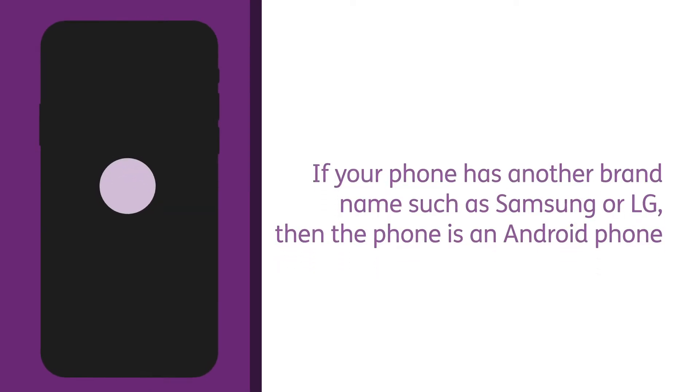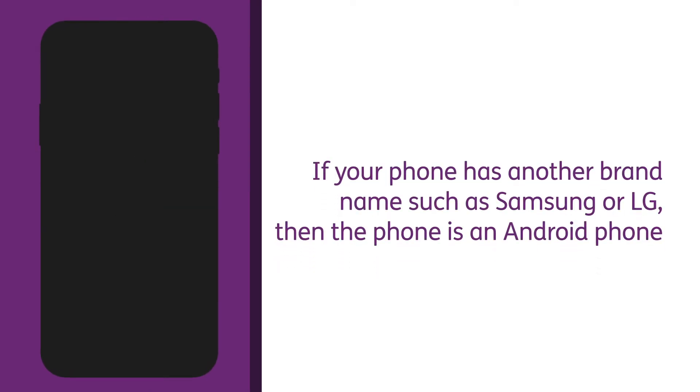To tell if your phone is an iPhone, check the back of the phone for an Apple symbol. If your phone has another brand name, such as Samsung or LG, then the phone is an Android phone.